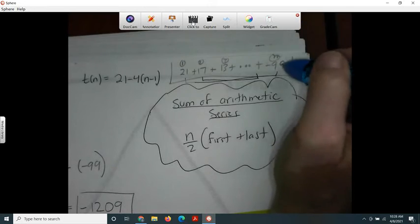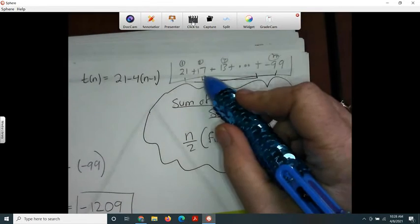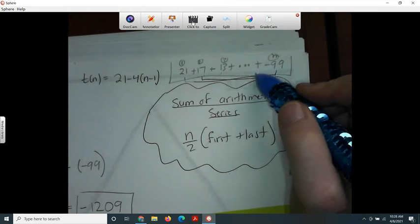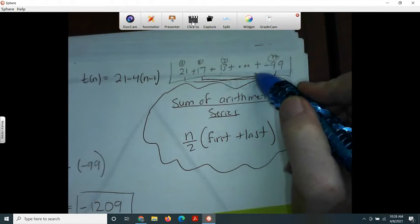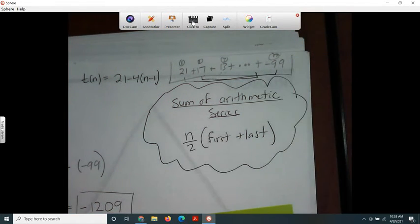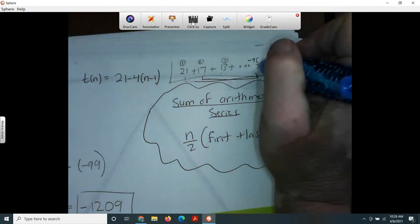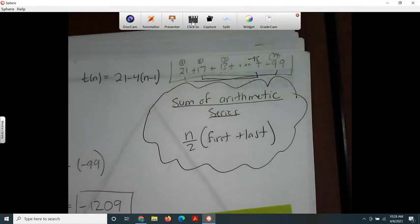Because this one is going down, it's subtracting 4 every time. So if I want to go backwards, I'm going to add 4. So what's negative 99 plus 4? This would be negative 95. Well, negative 95 plus 17, I guarantee it's going to equal negative 78.